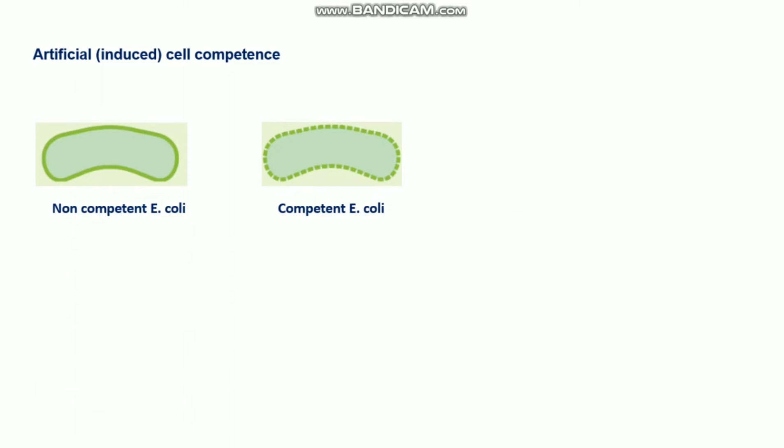The second type is artificial or induced cell competence, where researchers make cells competent through electrical or chemical manipulation to increase the permeability of the cell membrane.